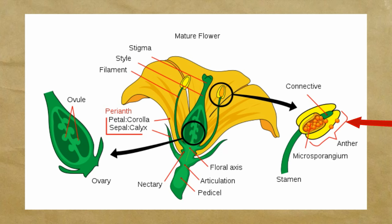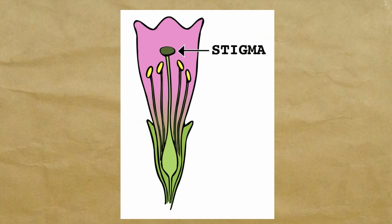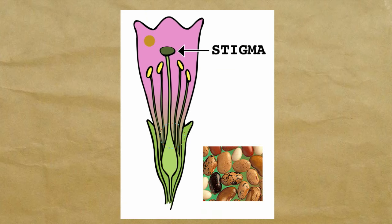The stamen contains an anther that produces pollen. The female portion is called the pistil and it contains the ovary. Most flowers have petals that help attract insects that help spread the pollen. Fertilization occurs when pollen falls onto the stigma and a seed's embryo will begin to develop.